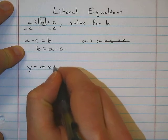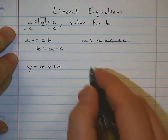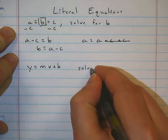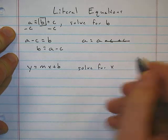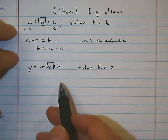We'll look at an equation we see a lot: y equals mx plus b, slope-intercept form. Let's solve for x. Sometimes it might help if you put a box around the variable you're solving for.